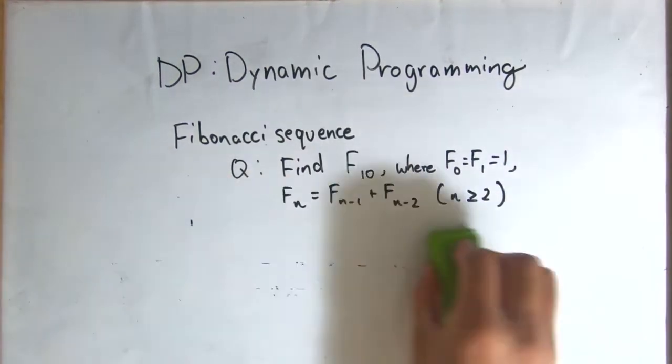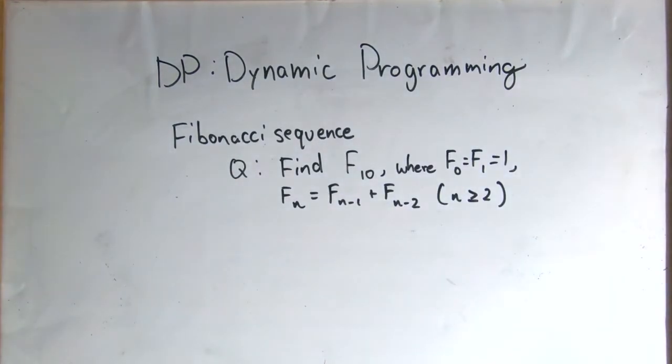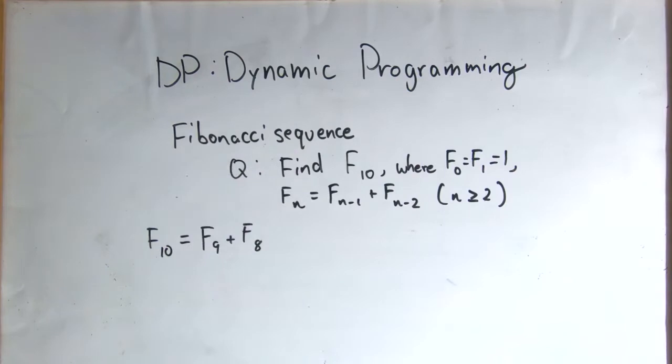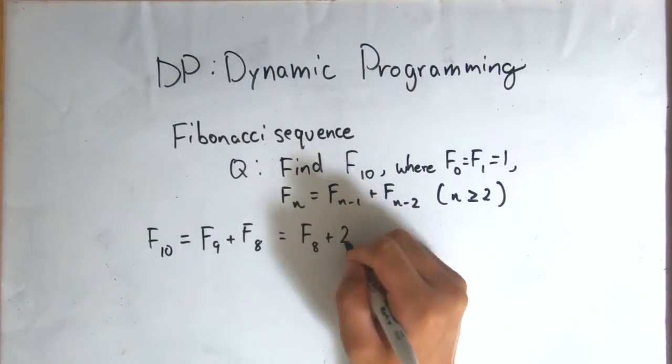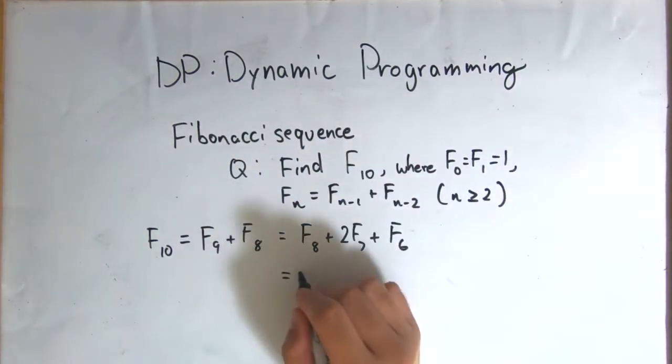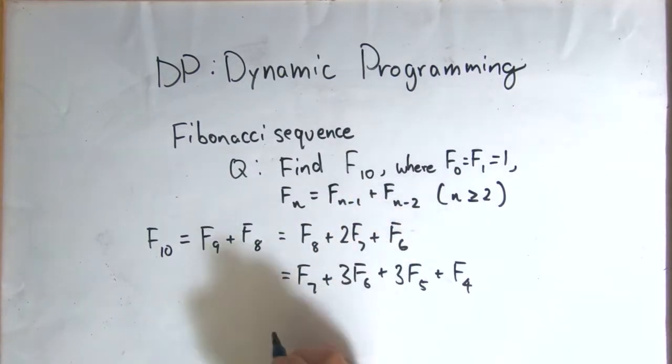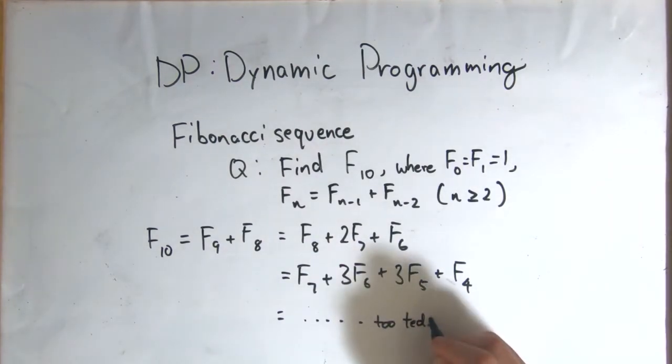A more inefficient version of this, say if we want to calculate F10, we would expand it like F10 equals F9 plus F8 equals F8 plus 2F7 plus F6 equals on and on and on, until you get to F0 or F1, at which case you will re-substitute it with 1.